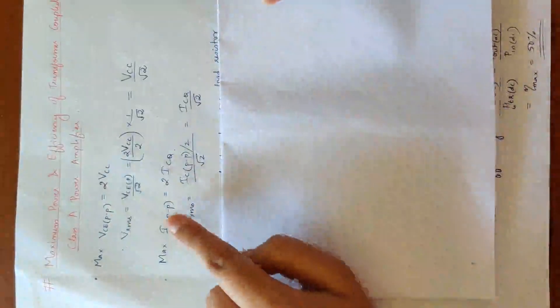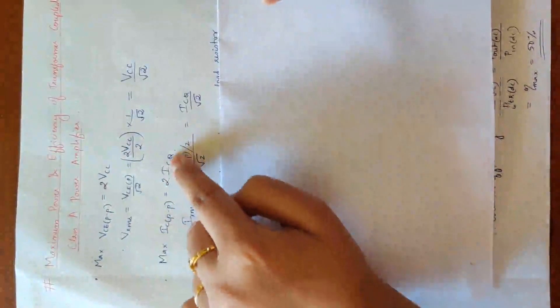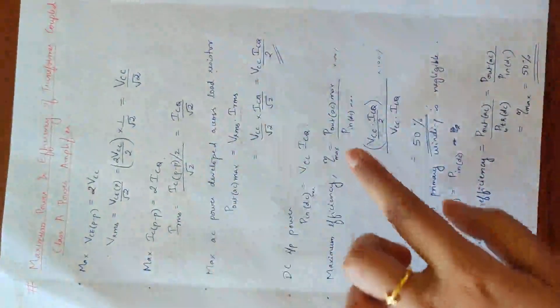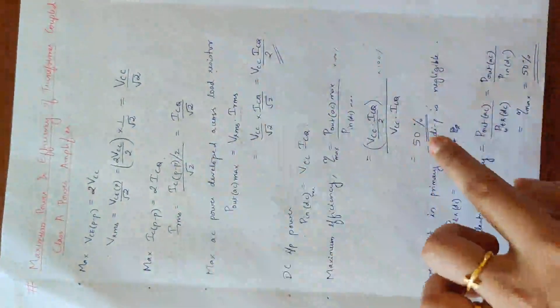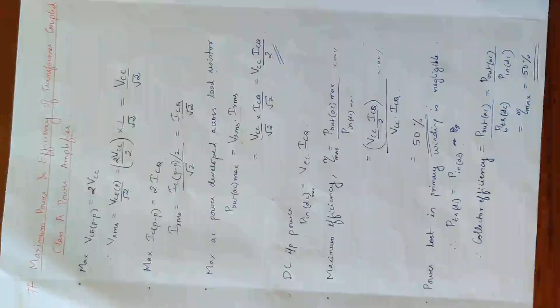Maximum VC peak-to-peak is 2 Vcc. Maximum IC peak-to-peak is 2 ICQ. ICQ cancels, giving 50%. You can derive the maximum AC power developed equation yourself.